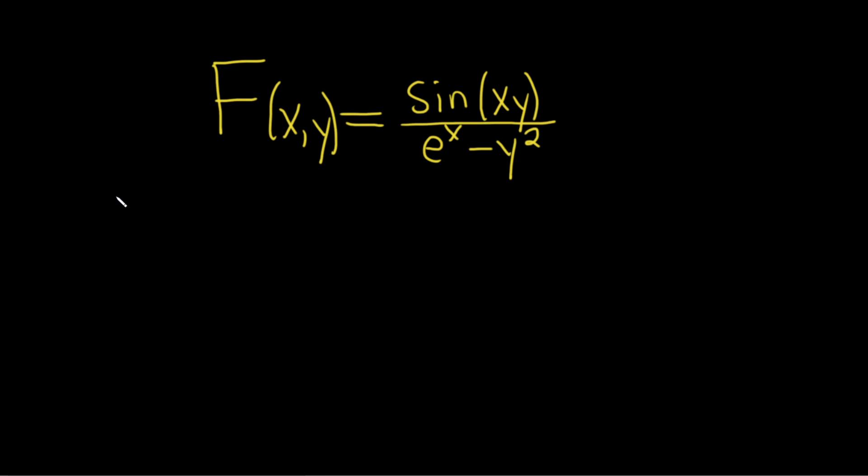Hello, in this problem we're going to find the set of all points at which this function is continuous. So this is a function of two variables. The input is an ordered pair x comma y.